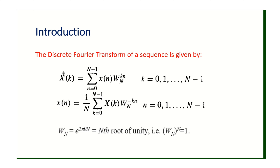Let us look into the equation of DFT, where small x of n represents the input discrete signal and capital X of k represents the DFT of small x of n. X of k is given by the summation over n equal to 0 to N minus 1 of x(n) into omega_N power kn. To recover the original signal from X of k, we apply the inverse discrete Fourier transform. The Nth root of unity is given by omega_N, where omega_N power N equals 1.